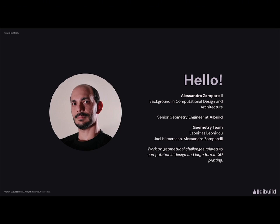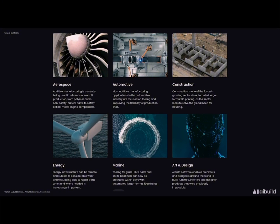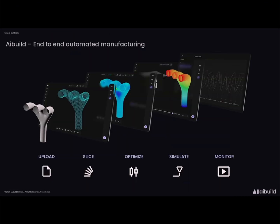I work there as a senior geometry engineer as part of the geometry team. AI Build is a London-based software company — we develop an integrated all-in-one platform for manufacturing in different industries, with a particular focus on large format 3D printing. While the background and roots of the company are in architecture, we actually work with different industries: aerospace, automotive, construction, energy, marine, art and design, and many others. The software works in a modular workflow that allows performing the slicing of the object to produce the toolpath needed to print. It is hardware-agnostic, so you can use it from desktop printers to big gantry printers and multi-axis robots.